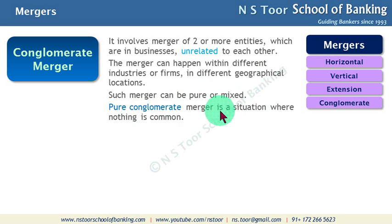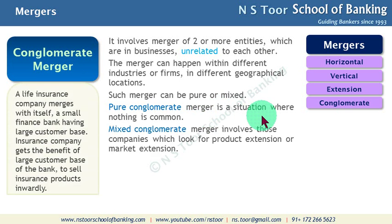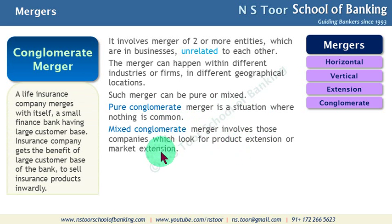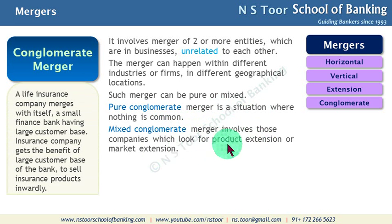In a mixed conglomerate merger, it involves those companies which look for product extension or market extension, so they can go for these types of mergers.